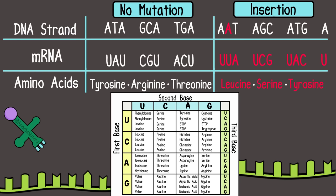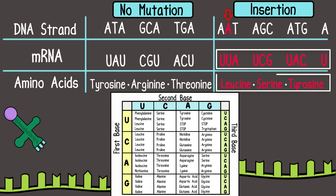If you look at this frameshift example here, where a single base has been inserted, you can see how the following codons — which have 3 bases each — are now all affected as the reading frame has been shifted. This example shows how it can lead to many amino acid changes.